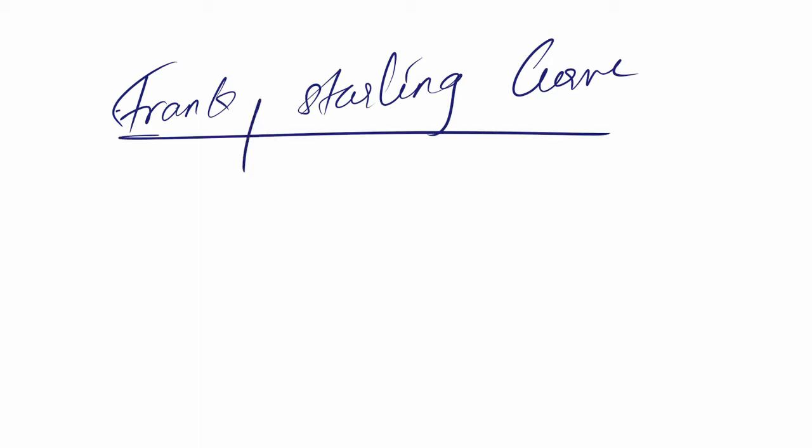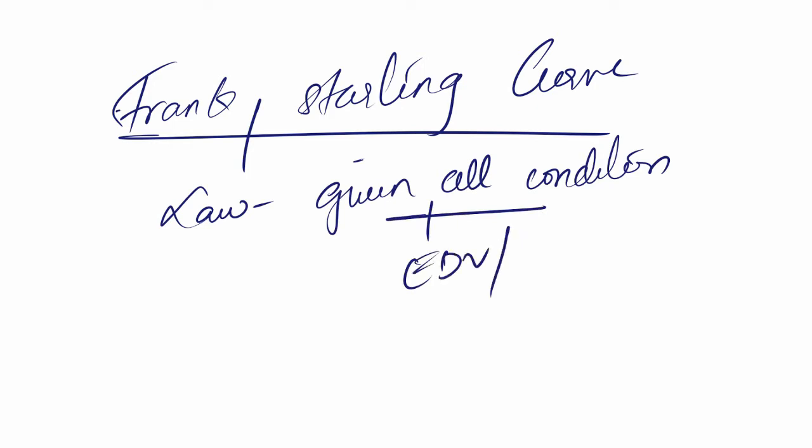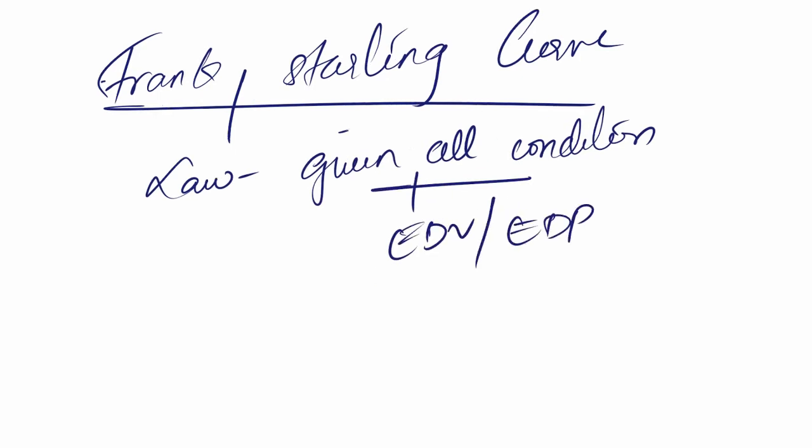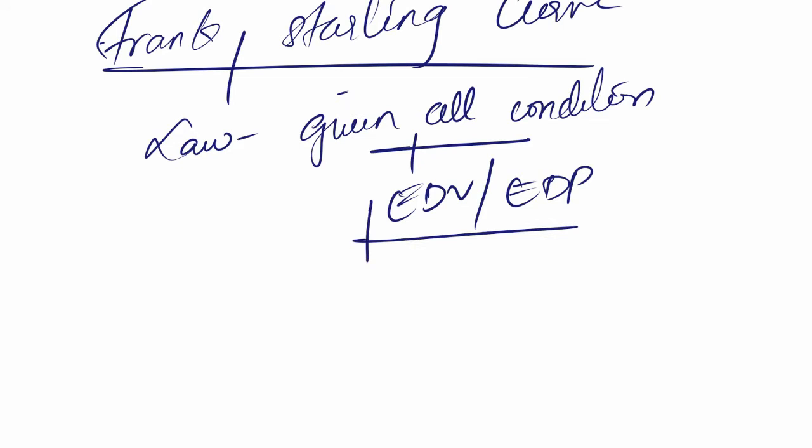The final part of cardiac output, where we will be looking at Frank-Starling law and the curve and various interpretations of it. Frank-Starling law states that given all other conditions are the same and we only play with the end diastolic volume or the end diastolic pressure, increase in this will lead to an increase in ejection volume or stroke volume.